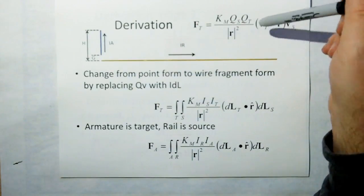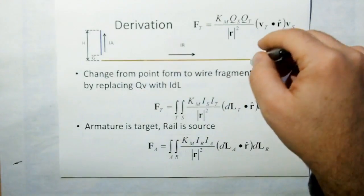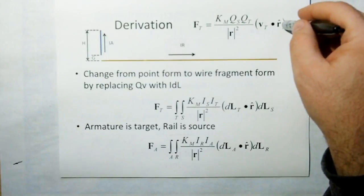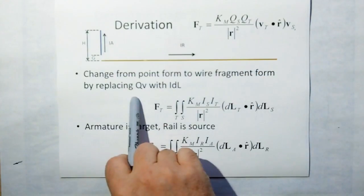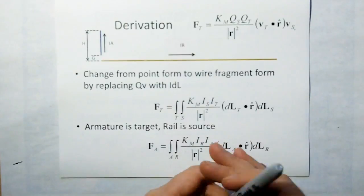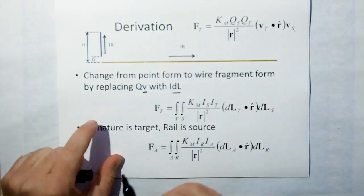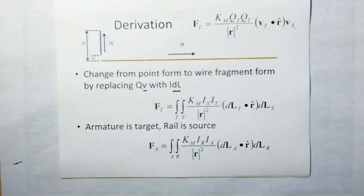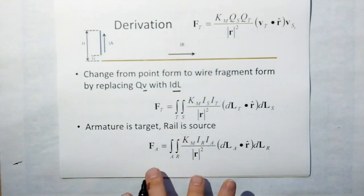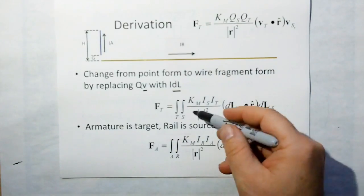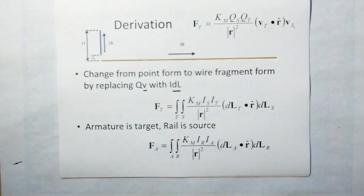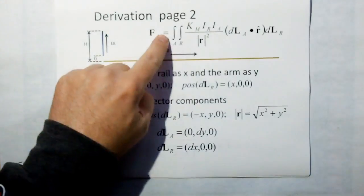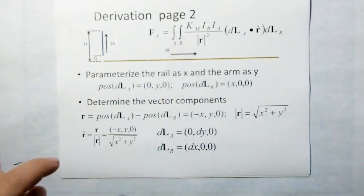First thing we do with new electromagnetism when applying them to filamentary currents is take them from point charge form into wire fragment forms. You replace the QV with the IDL where the V is a vector and the differential length is a vector. Next we're going to assign the armature as the target and the rail as the source, swapping out the R for S and A for T.